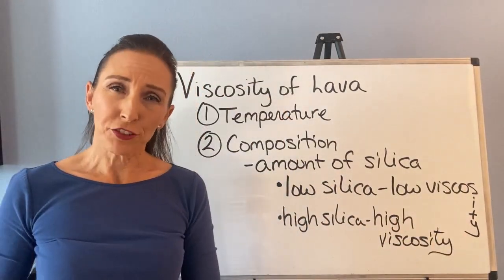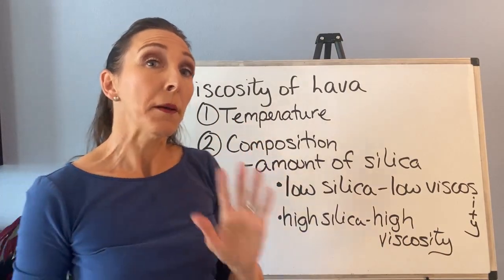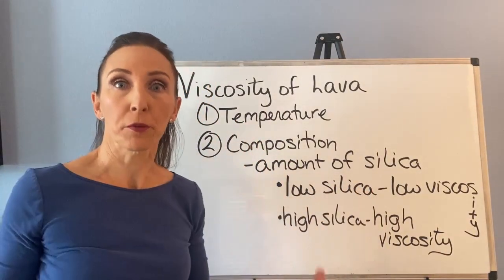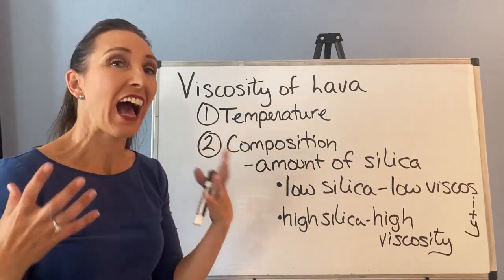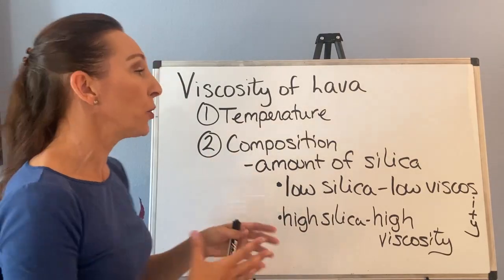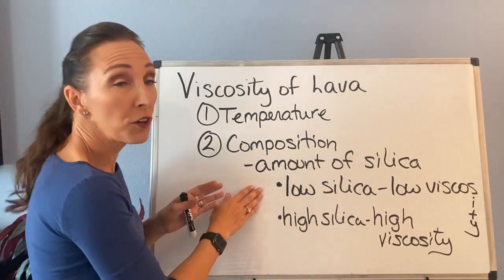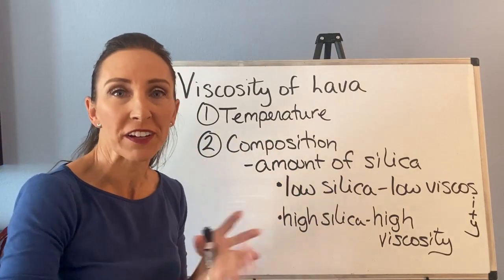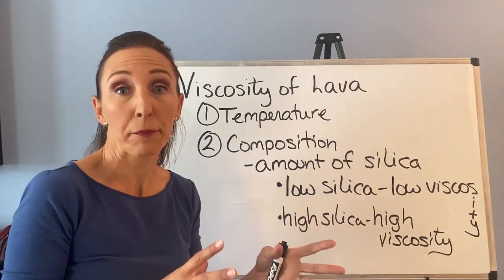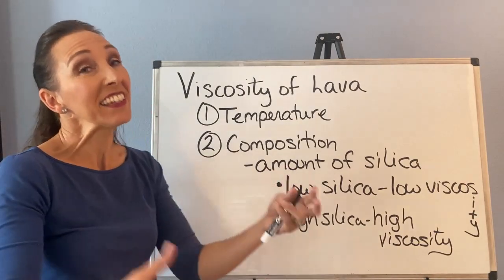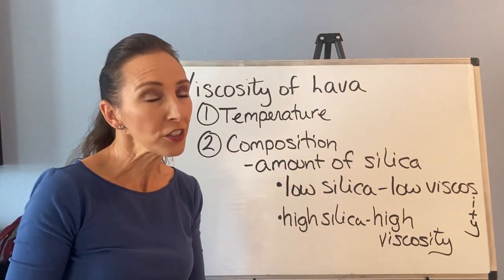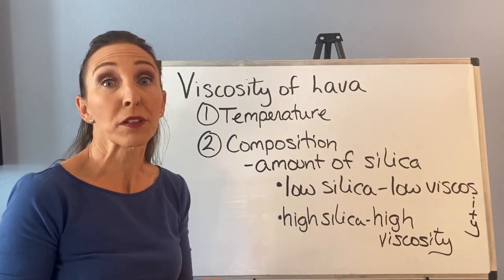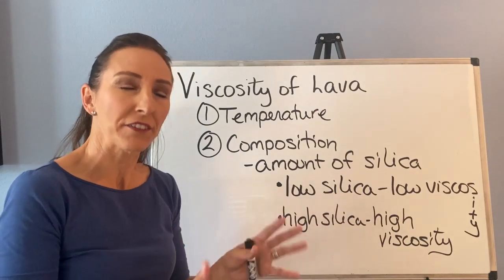One thing to mention is that these two factors are often related. Low silica melts — mafic melts — tend to exist at higher temperatures, so low silica combined with high temperature makes lava flow very easily, like really hot pancake syrup. High silica melts tend to exist at lower temperatures, giving really high viscosity, like cold pancake syrup. So the two factors are kind of complementary.